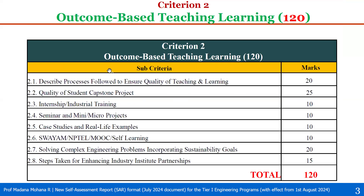Criterion 2 is divided into eight sub-criteria. The first one, 2.1: Describe process followed to ensure quality of teaching and learning — weightage is 20. Then 2.2: Quality of student capstone project — weightage is 25.